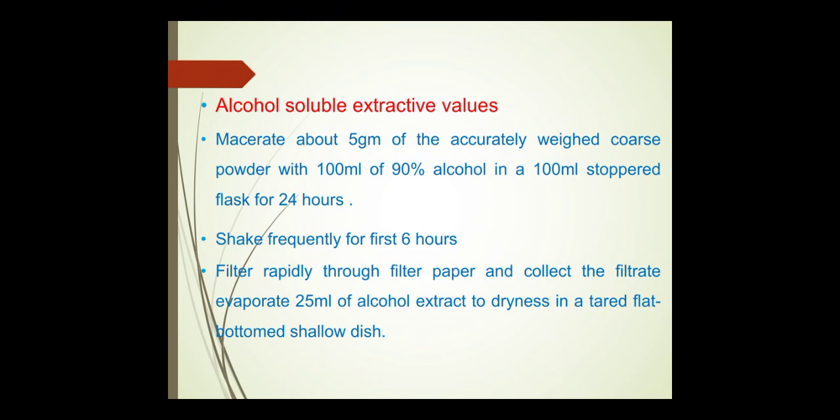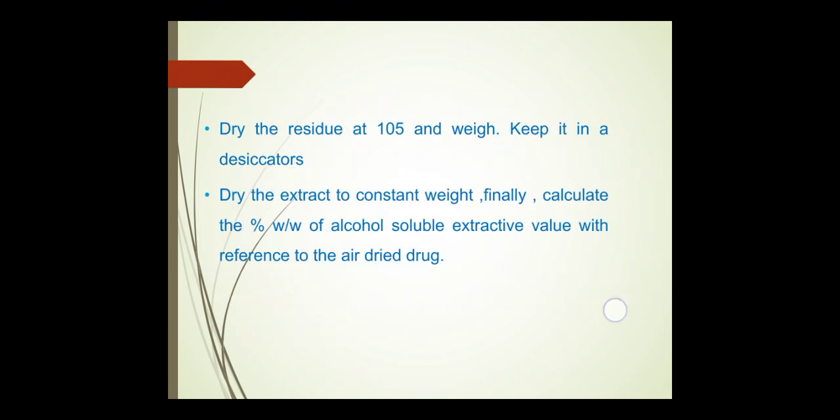Procedure for alcohol-soluble extractive: macerate about 5 grams of accurately weighed coarse powder with 100 ml of alcohol in a 100 ml stoppered flask for 24 hours, shaking frequently for 6 hours. Filter rapidly through filter paper; discard the first 25 ml of filtrate and collect the next 25 ml. Evaporate to dryness in a tared flat-bottom shallow dish. Dry the residue at 105°C, weigh, keep in a desiccator, dry to constant weight, and calculate the percentage w/w of alcohol-soluble extractive with reference to the air-dried drug.